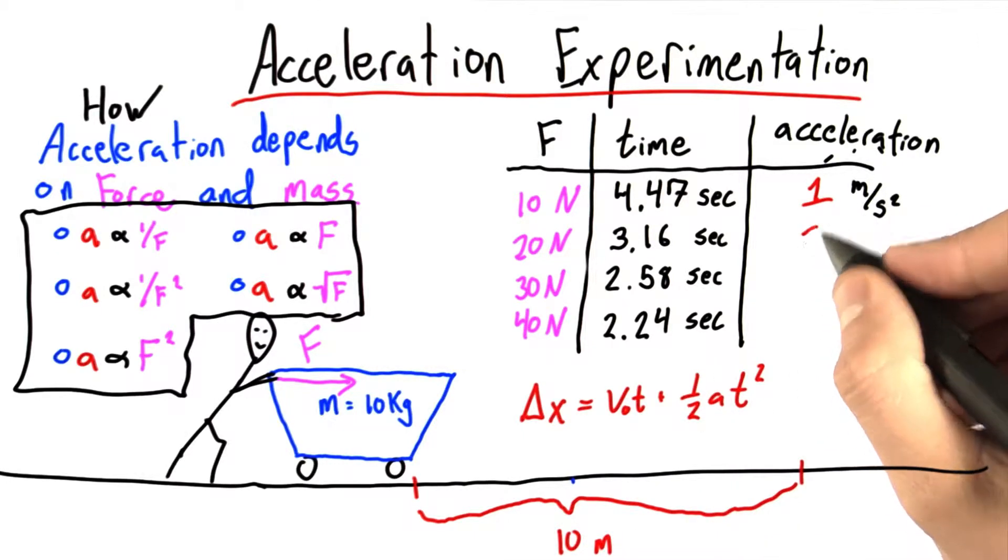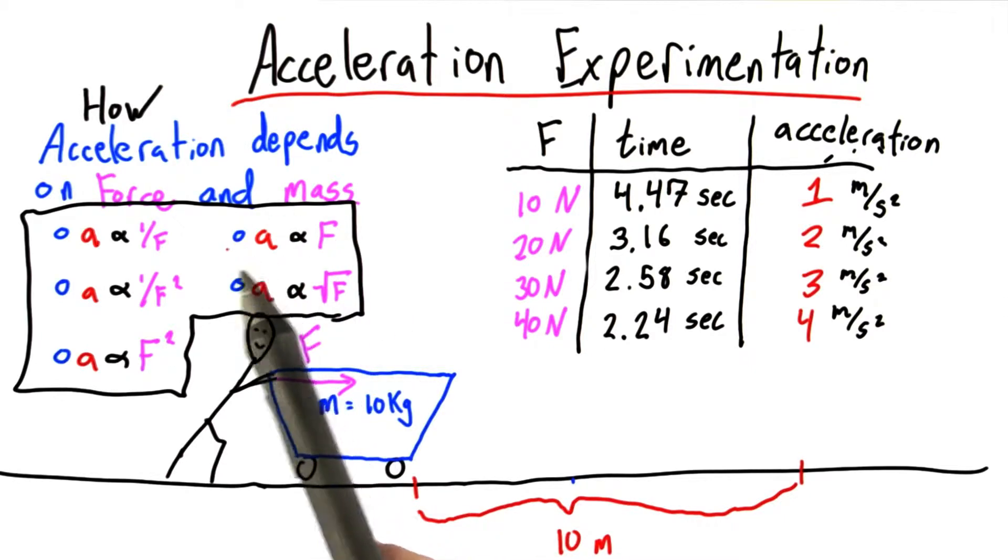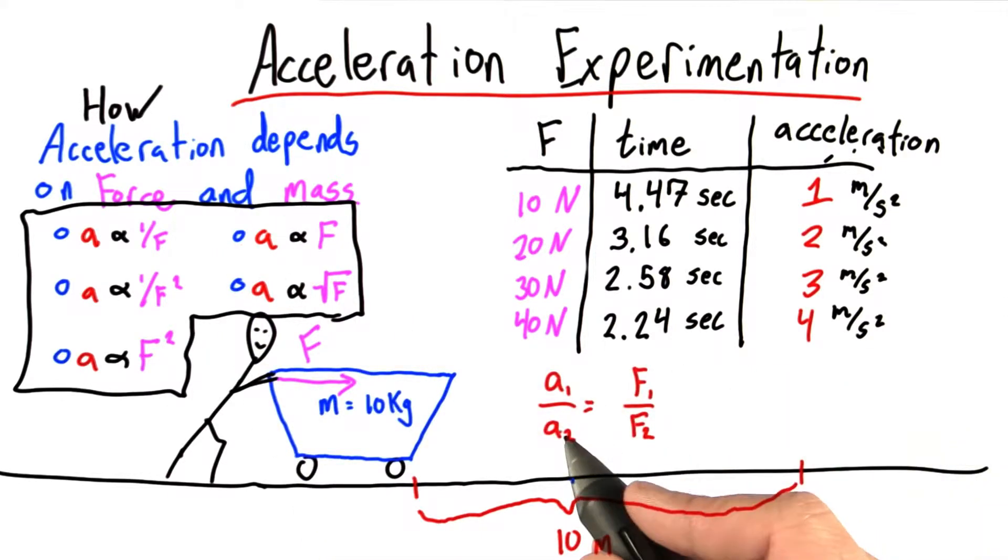If I use this equation and calculate the accelerations, I get 2, 3, and 4. And think back on how we calculate these proportionality problems. We set them up as ratios.